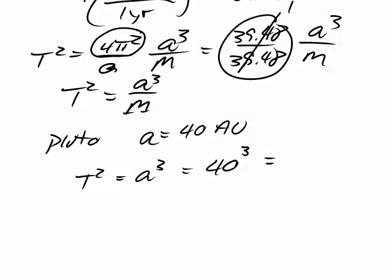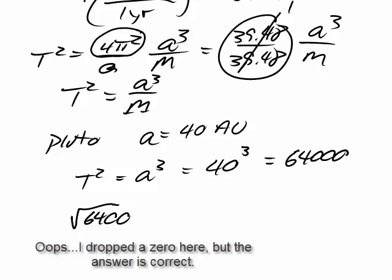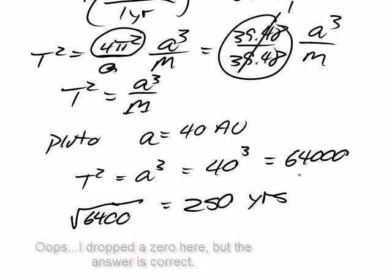And that would be in years. So, it takes Pluto 250 years to orbit the Sun once.